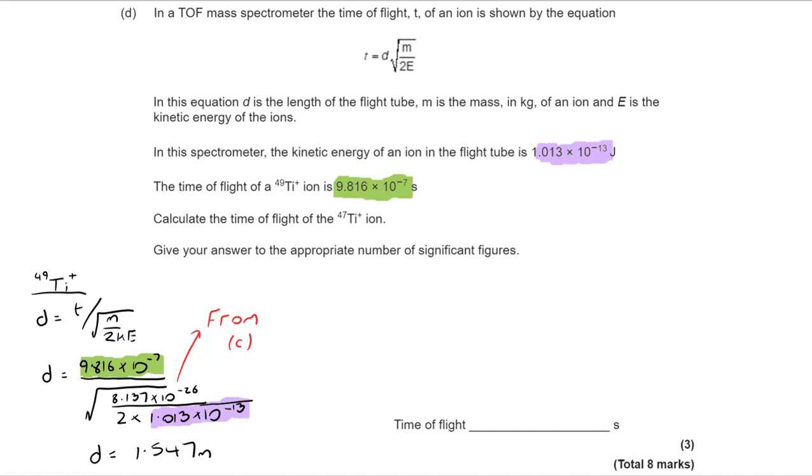If you then consider that that flight tube is the same for the titanium 47 and the kinetic energy is the same, we can start to piece this together. So I look at my titanium 47 ion. First thing I'm going to do is take my distance of 1.547 metres, and you can see that I'm building the equation up. So t equals d, and I'm about to put the rest of the information in.